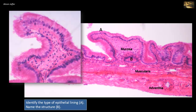The muscle fibers do not segregate into two distinct layers as elsewhere in the gut tube. This arrangement conforms to the necessity of mass contraction to reduce the size of the organ rather than peristalsis. In fact, this is the wall of the gallbladder. The gallbladder is a muscular sac that concentrates and stores bile. When it contracts, it expels the bile into the duodenum. The epithelium is formed of simple, very tall columnar cells with basally located nuclei, as seen in A.